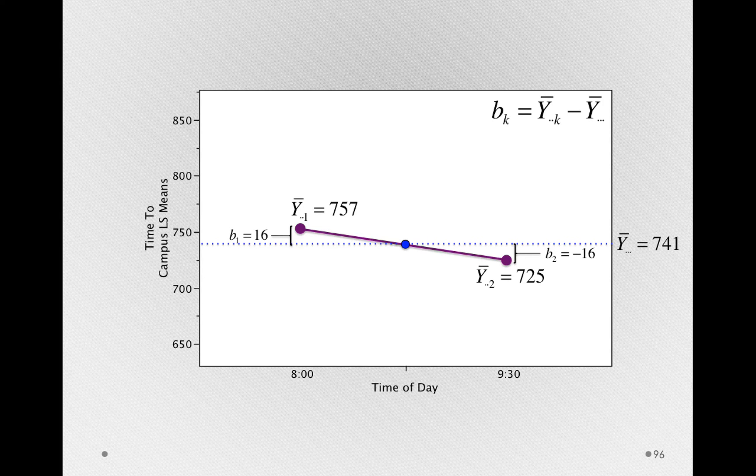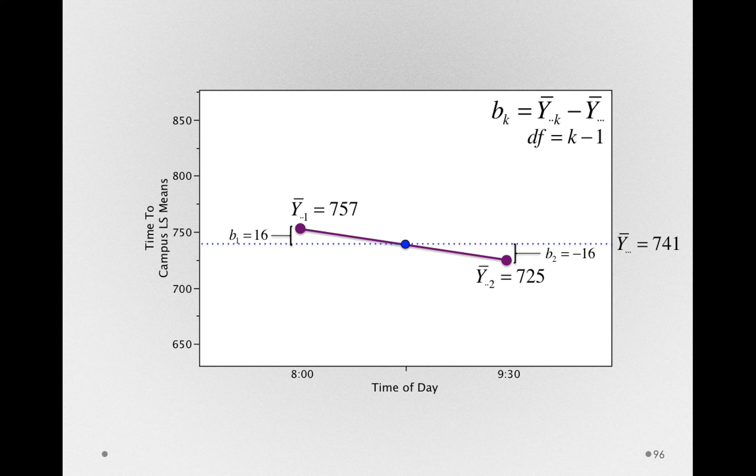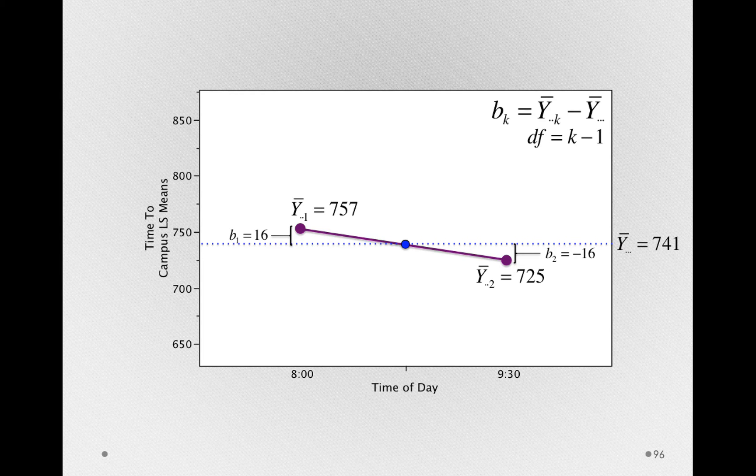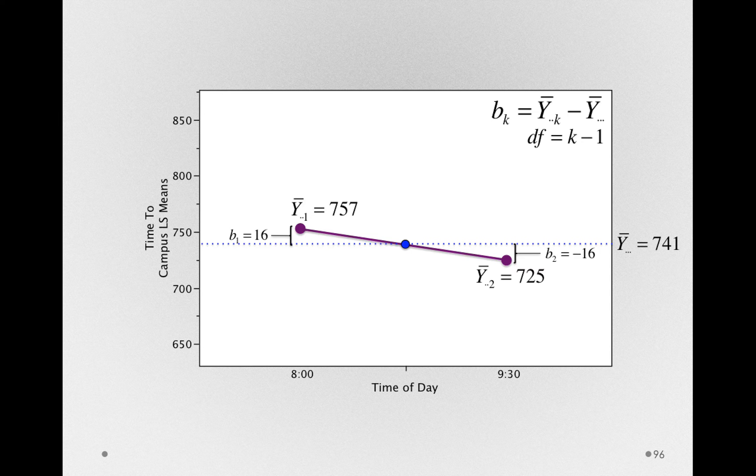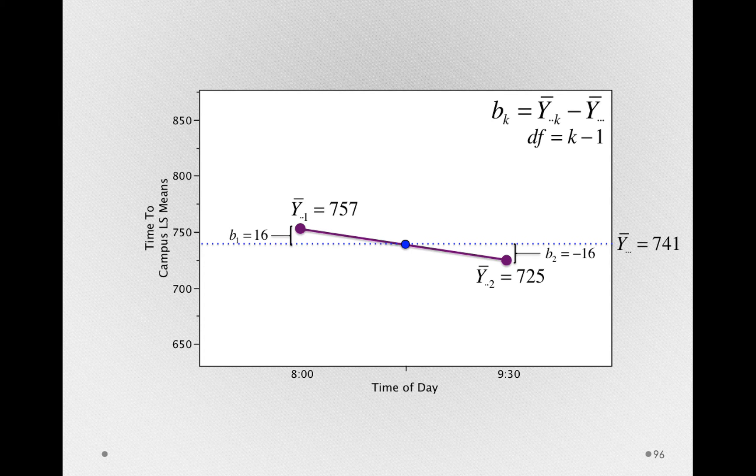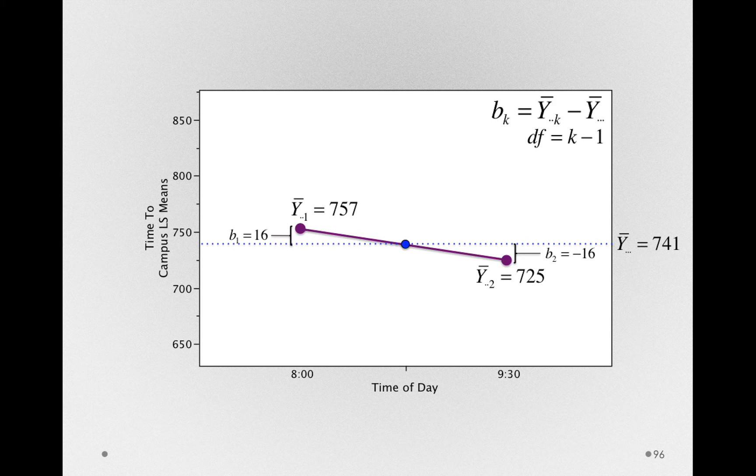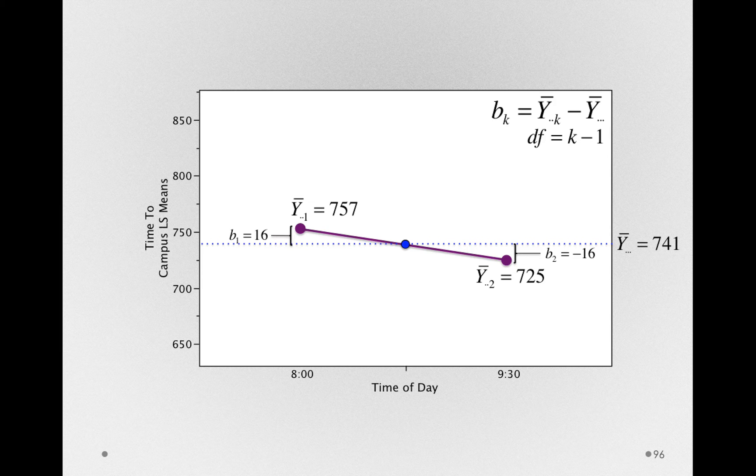So these B sub 1 and B sub 2 values are not independent. In fact, they have degrees of freedom equal to K minus 1. Remember, degrees of freedom are simply a measure of how much independent information there is. So if I told you B sub 1, you can immediately tell me what B sub 2 is. They are statistically dependent perfectly.